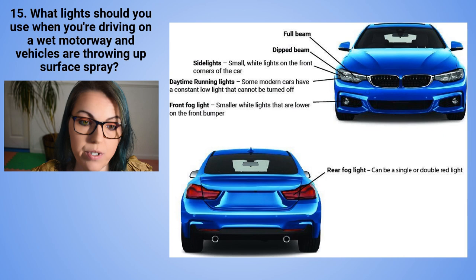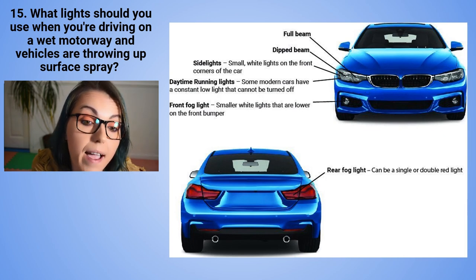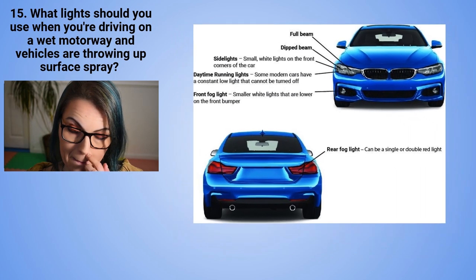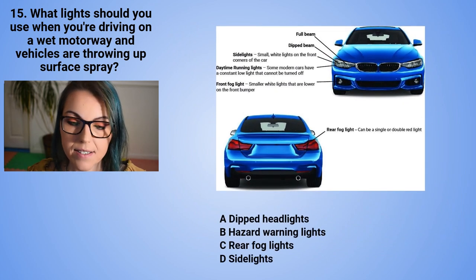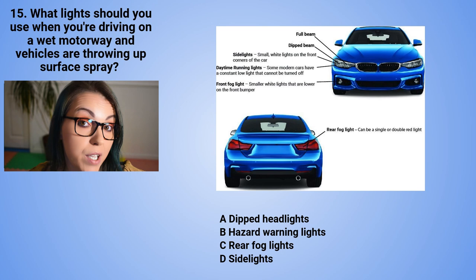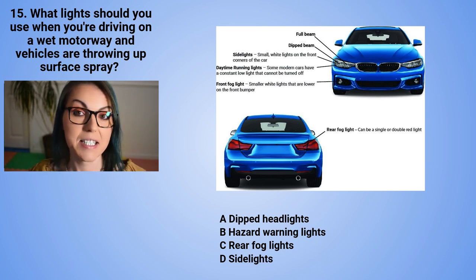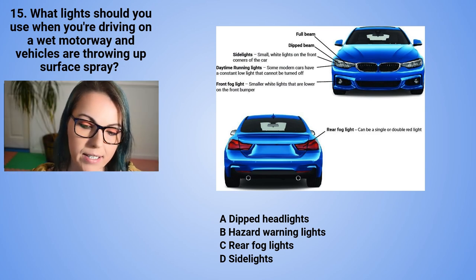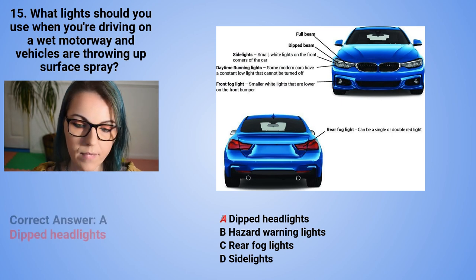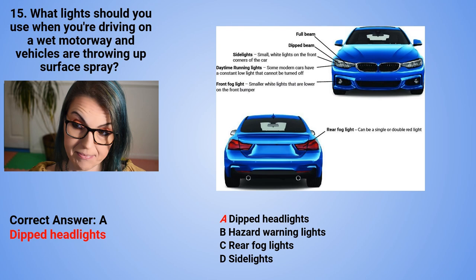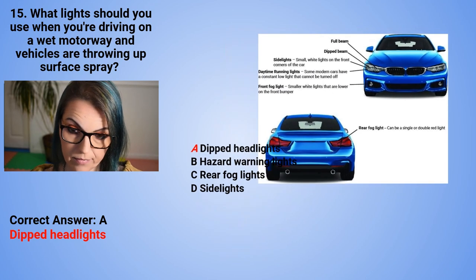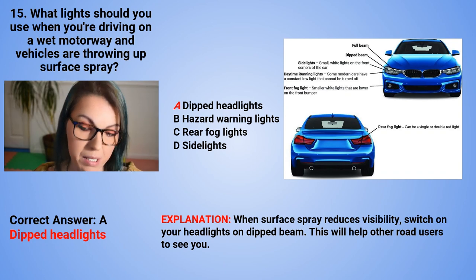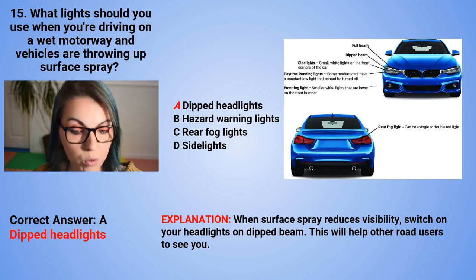Question 15: What lights should you use when driving on a wet motorway and vehicles are throwing up surface spray? A. Dipped headlights. B. Hazard warning lights. C. Rear fog lights. Or D. Side lights. The correct answer is A — dipped headlights. When surface spray reduces visibility, switch on your headlights on dipped. This will help other road users to see you.